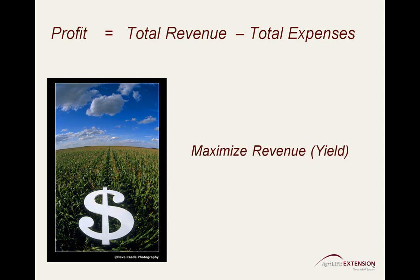In agricultural production settings, we maximize the revenue by increasing yield, and we minimize expenses by controlling our inputs. In production agriculture, yield is directly related to the inputs, therefore it takes solid management decisions to optimize profits.